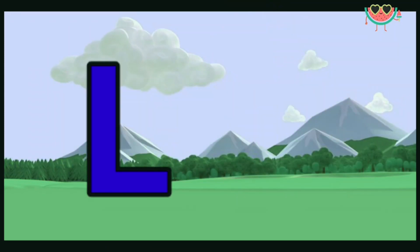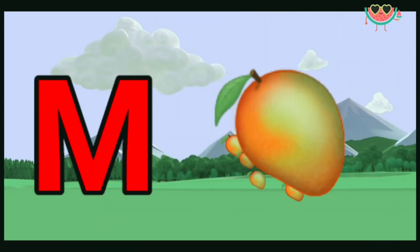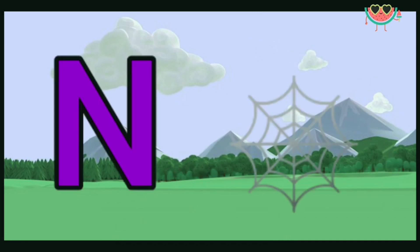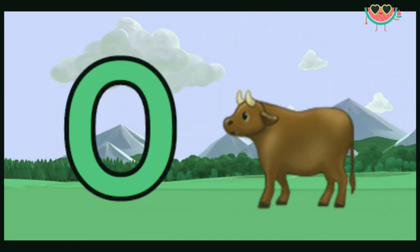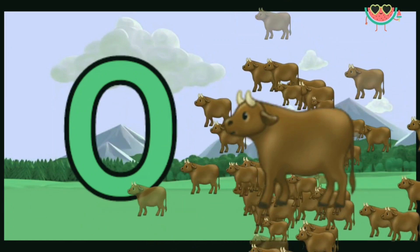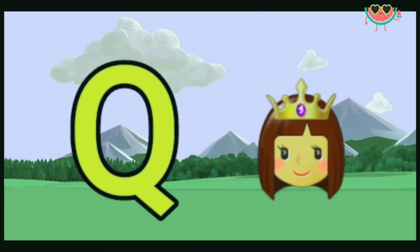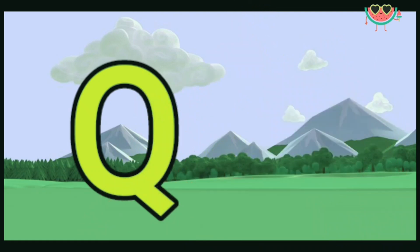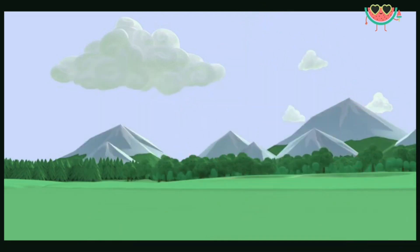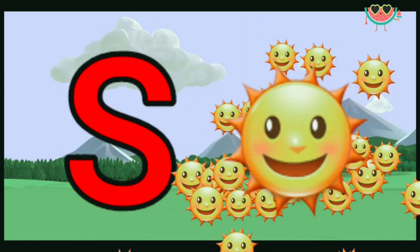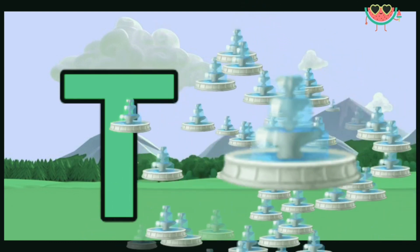L for lion. M for mango. M for nest. O for ox, P for pigeon, Q for cute, R for roach, S for sun, T for tap. U for umbrella.